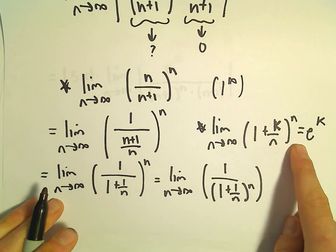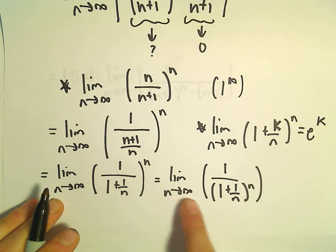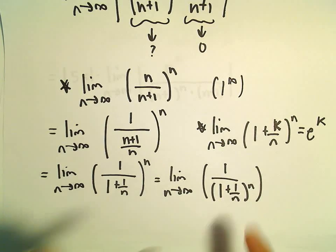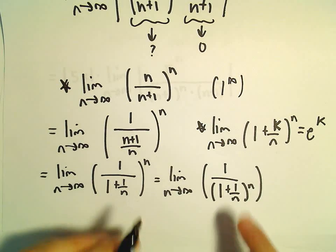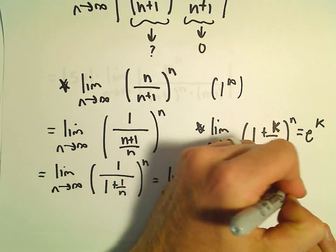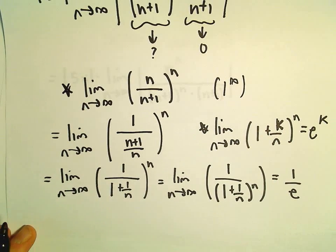And now we can use this little result. Okay, so the limit as n goes to infinity of 1 plus 1 over n raised to the n, that's all just going to equal e to the 1st. So here we're getting 1 over e for our limit.